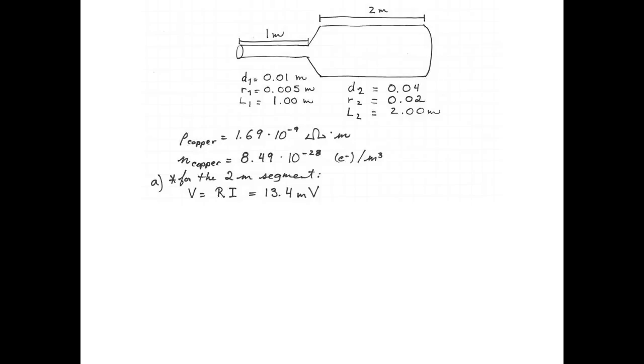So to find the current, I'm going to use Ohm's Law. I know that the potential difference across the 2 m segment is given by the resistance multiplied by the current, and I know that that is 13.4 millivolts.